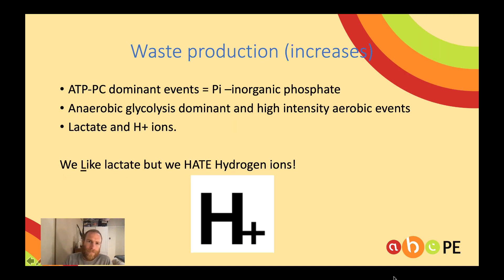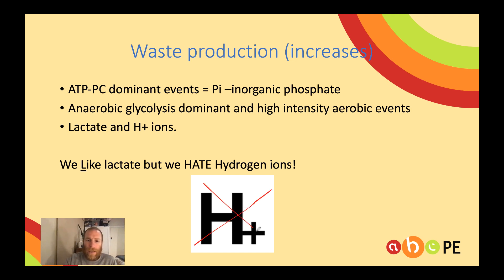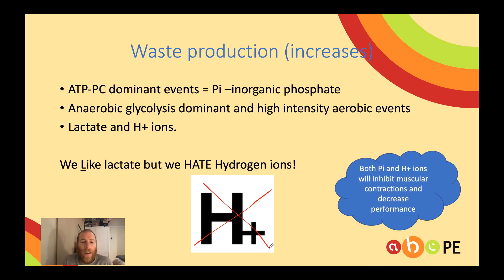The final letter in our FORTU acronym is W for waste production, and this will also increase. This is dependent upon the exercise you do. In a 100-meter event, the waste is inorganic phosphate, a byproduct of the ATP-PC energy system. In the 400-meter or high-intensity aerobic events, the waste is lactate and hydrogen ions. Lactate can actually be beneficial to the body and help with some ATP resynthesis. However, hydrogen ions are harmful — both inorganic phosphate and hydrogen ions are going to inhibit muscular contraction, leading to a decrease in performance.